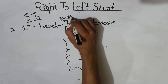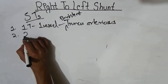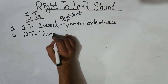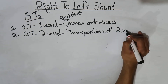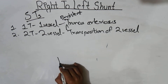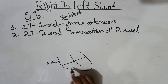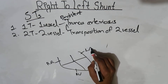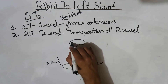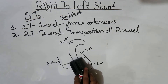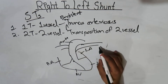So that is the first condition: persistent truncus arteriosus. In number two, 2T means two vessels — so here we have transposition of two vessels. Drawing a normal structure of the heart: normally the heart is divided into four chambers — right atrium, right ventricle, left ventricle, and left atrium. Blood from the left ventricle flows out through the aorta, which I'm drawing here, and blood from the right ventricle flows out through the pulmonary trunk.